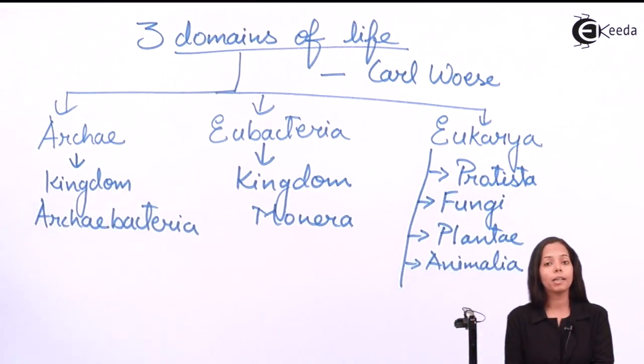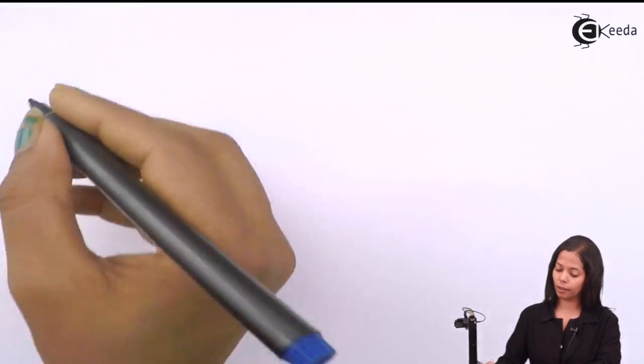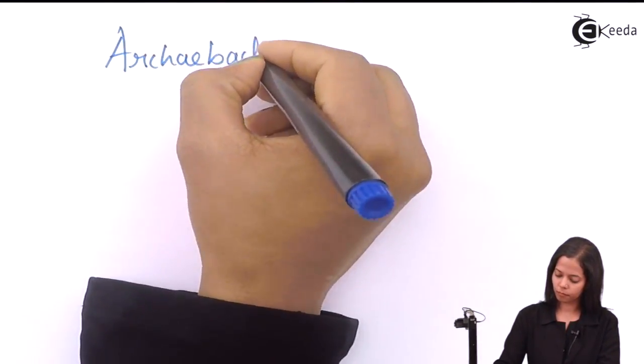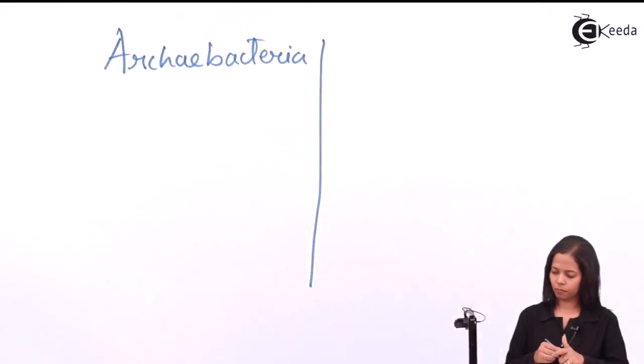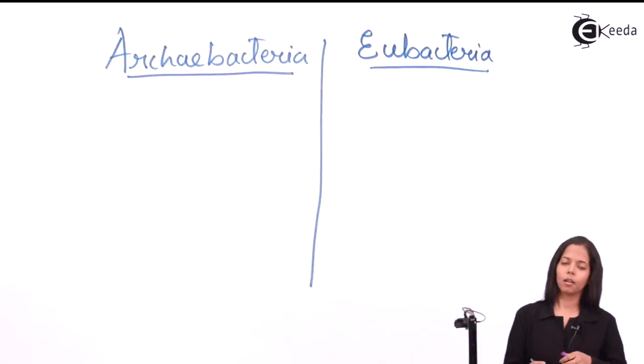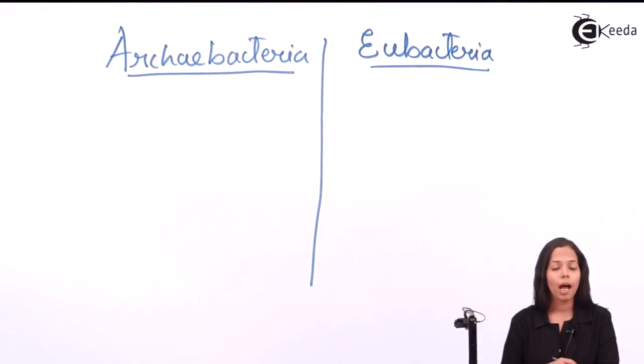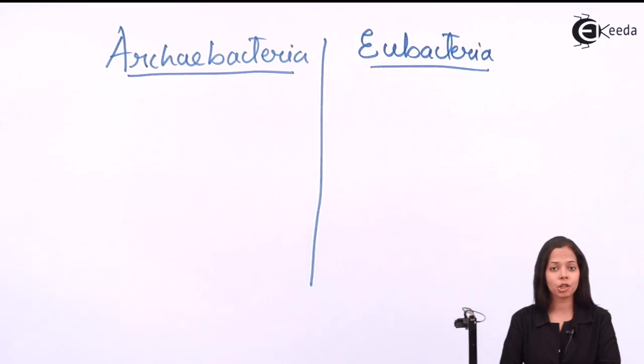Now we'll understand the difference between Archaebacteria and Eubacteria, because rest other kingdoms I have already talked to you. Archae means ancient or very primitive. Eu means true. So these bacteria are called true bacteria, and these bacteria are called ancient bacteria.